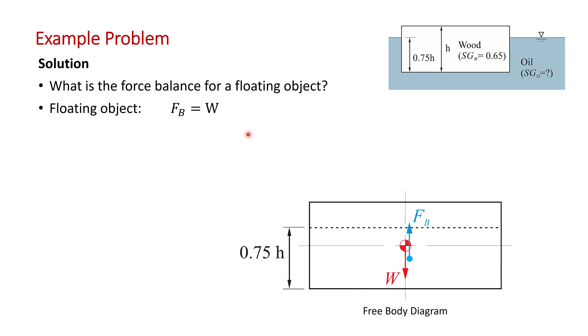So for a floating object, the weight equals the buoyancy force. The weight of course acts at the centroid, the center of mass of the wood block, which would be the center of volume for a uniform piece of wood. So right there.